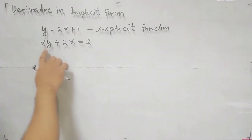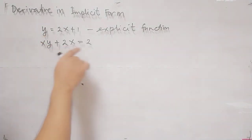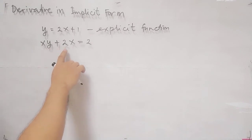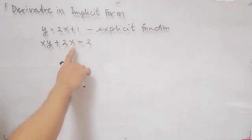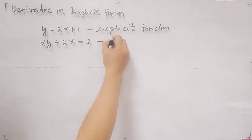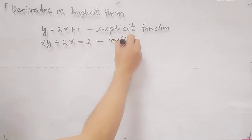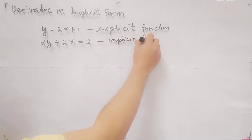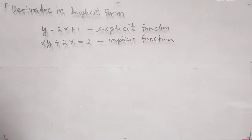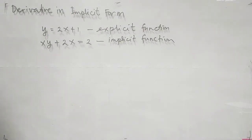Now, how about this one? This is not in terms of y equals, but this is xy plus 2x plus equals 2. For this function, this is an example of an implicit function. So you can now distinguish what is an explicit function and what is an implicit function.